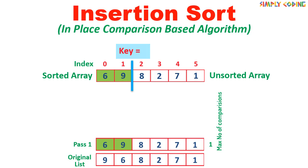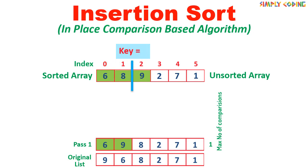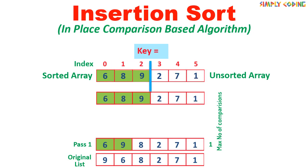Now the sorted array has two numbers and unsorted has the remaining 4. In the next pass, it starts by taking the first element in unsorted array and copying it in the key. It then starts comparing backwards with sorted array till it finds a value lesser than it or till the end of sorted array is reached. Here first 9 is compared with 8. It is higher, so it is moved right. Now 6 is less, so it stops comparing any further and key is inserted between 6 and 9. This completes the second pass.